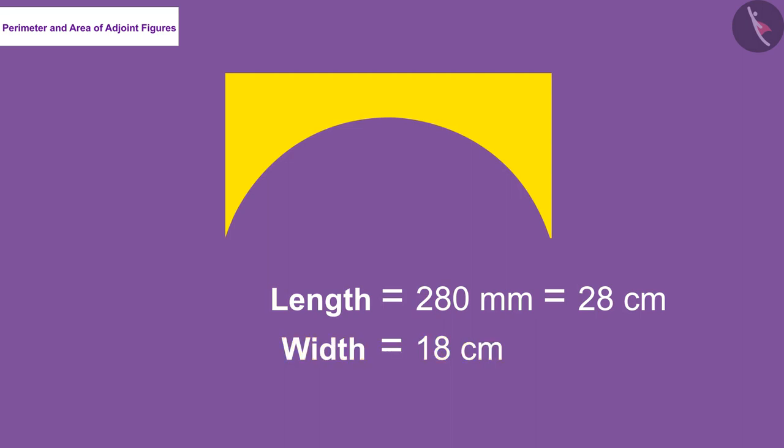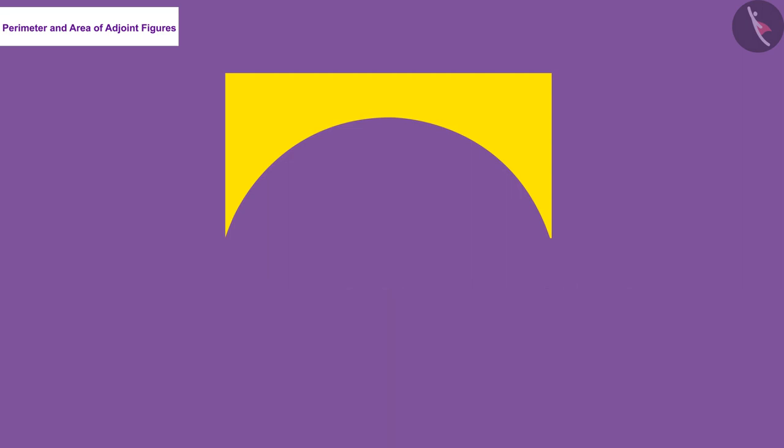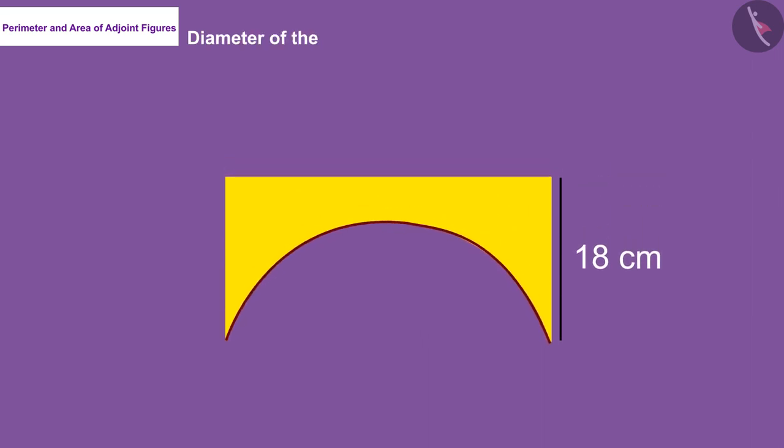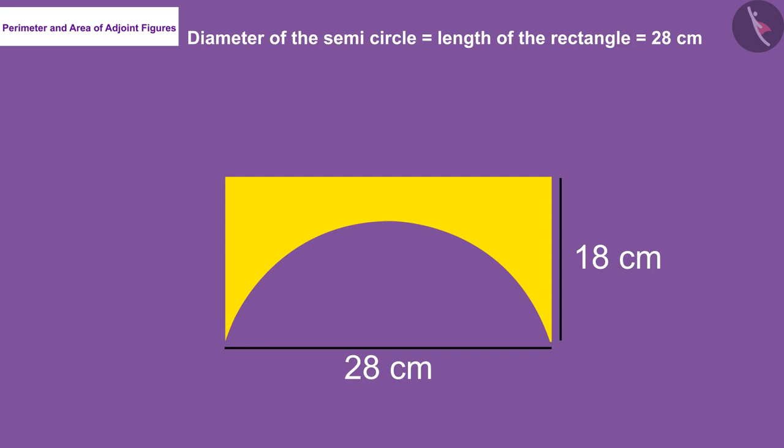The diameter of the semicircle is equal to the length of the rectangle. As we know, the opposite sides are equal in the rectangle. We can see that the yellow shape will look like something like this. Name the vertices A, B, C, and D.